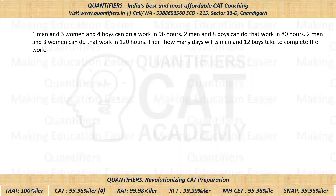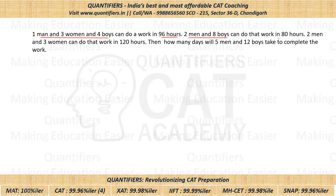Here is the question — please pause the video and give it a try. One man, three women, and four boys can do a work in 96 hours. Two men and eight boys can do the same work in 80 hours. Two men and three women can do the same work in 120 hours. If five men and twelve boys are doing the same work, how much time will they take? This is what we have to find.